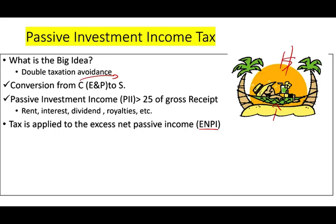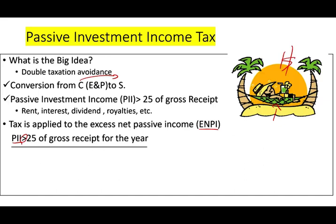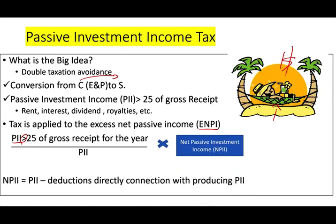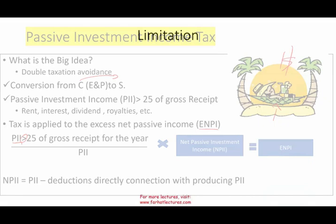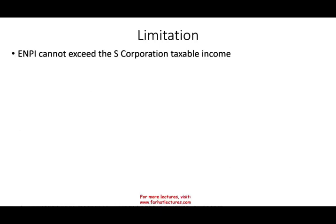How do we calculate the Excess Net Passive Income? We look at passive investment income (PII), then compute PII in excess of 25% of gross receipts. We divide that excess amount by PII, then multiply by net passive investment income (NPII), which is PII minus deductions directly connected with the production of the PII. That gives us ENPI. One important limitation: the ENPI cannot exceed the S-Corporation's taxable income. We'll work a couple of examples to make sure you are comfortable with this computation.